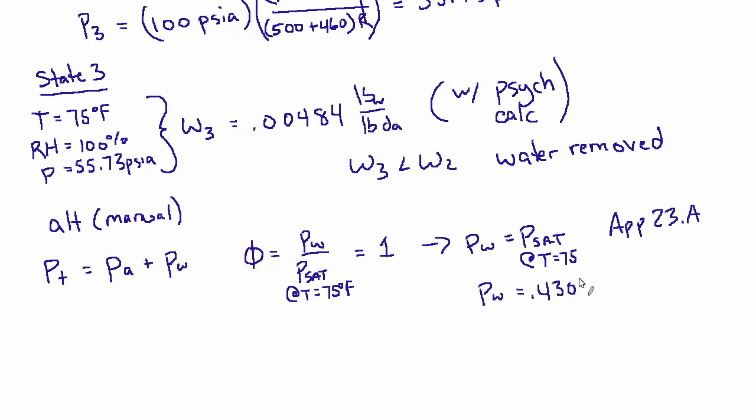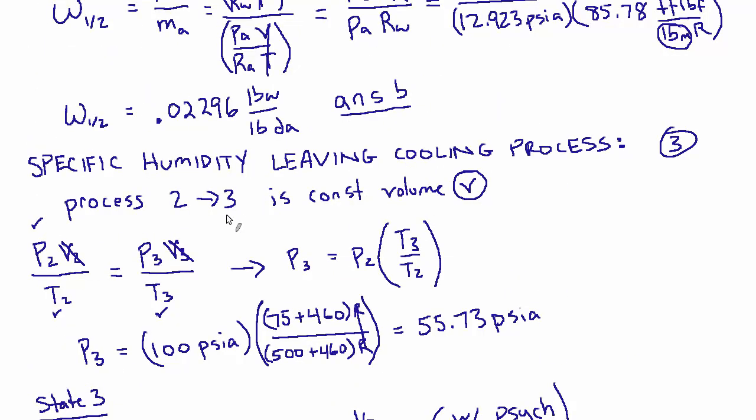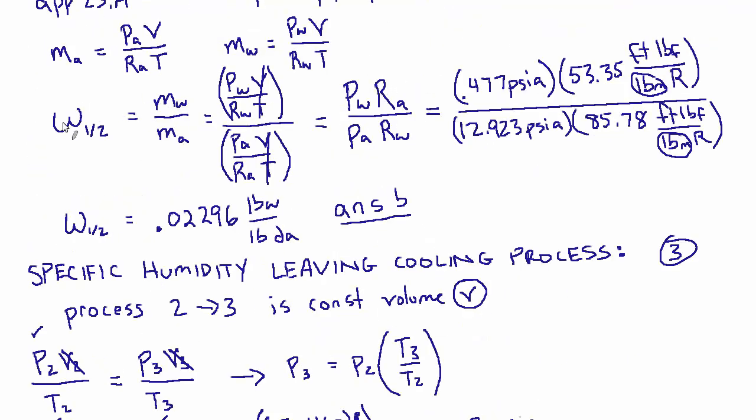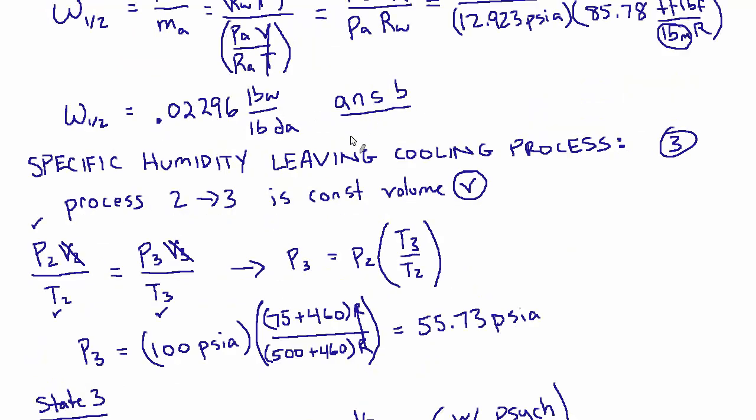So let's again go to the steam table app 23a and find out what this value is. It is 0.4304 based on interpolating between 74 and 76. And that's PSIA. And then we can subtract that from the total pressure to get the partial pressure of air. Partial pressure of air equals total pressure is 55.73 minus 0.4304 equals 55.3. And then just to speed things along a bit, I'm going to go back to this relationship here when we said that the humidity ratio equaled partial pressure times specific gas constant over the same thing.